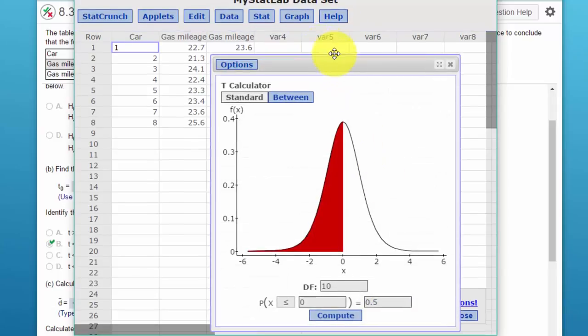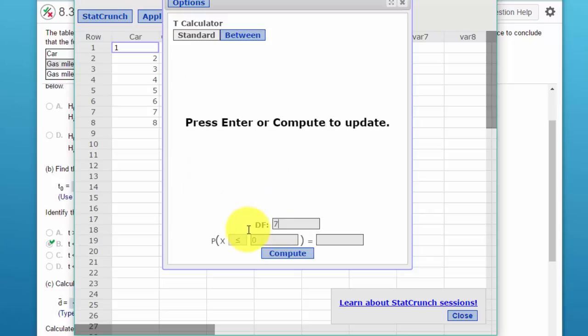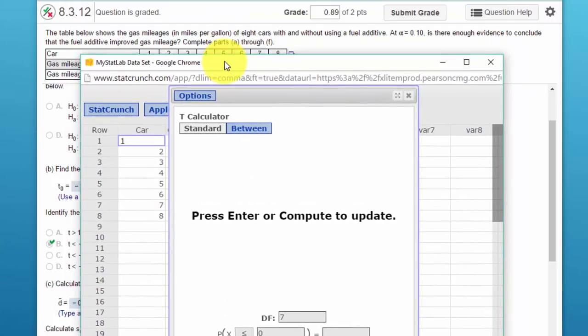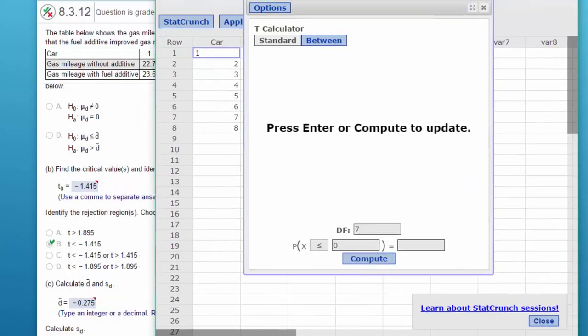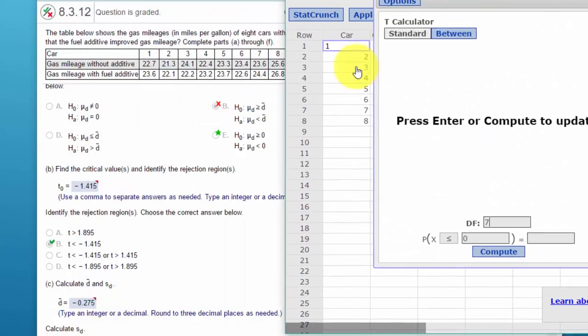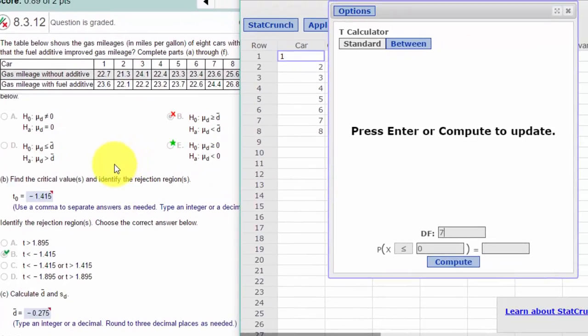So here's our calculator. We need to put in the degrees of freedom. We've got 8 pairs, therefore the degrees of freedom is 7, and alpha is 0.1. We have the alternative pointing to the left, that means we've got a lower tail test, left tail test, so I'm going to leave that pointing that way, and we're going to put in 0.1 because the entire area that we're interested in is in that left tail.